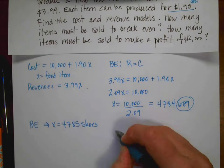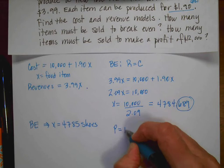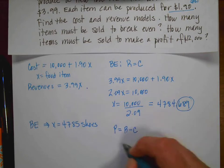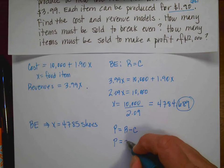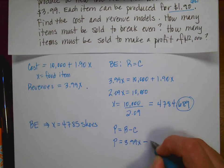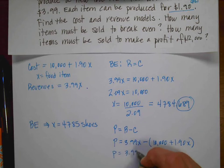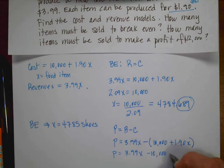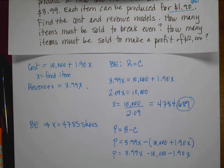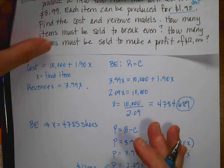The second question said, I need a profit of $12,000. So remember that profit is equal to revenue minus cost. So my profit is going to equal my revenue, 3.99X minus the cost, which is $10,000 plus 1.90X. So my profit is 3.99X minus $10,000 minus 1.90X. So when I combine like terms, profit is 2.09X minus $10,000.